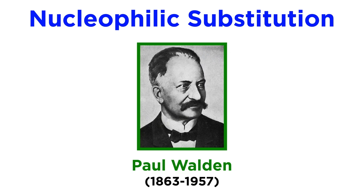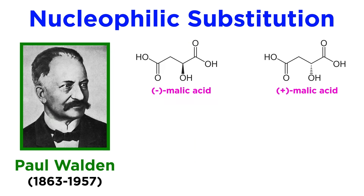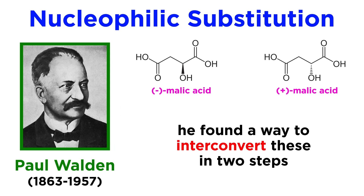This was discovered all the way back in 1896 by German chemist Paul Walden, when chemistry was much less sophisticated and we were not able to rigidly characterize molecules to know their structure. Walden found that the two enantiomers of malic acid — the plus and minus forms, meaning they possess opposite optical activities — could be interconverted through two steps.